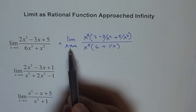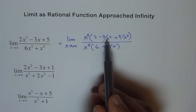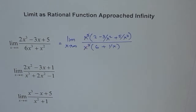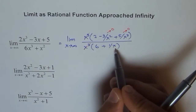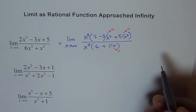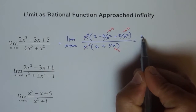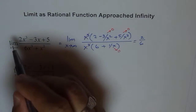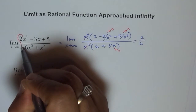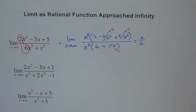We can always cancel out the x³ terms. Now if we take the limit as x approaches infinity, all the terms where x is in the denominator will approach 0. So 3/x², 5/x³, and 1/x all approach 0 as we approach infinity. So we are left with 2 over 6. And 2 over 6 is the ratio of the leading coefficients.